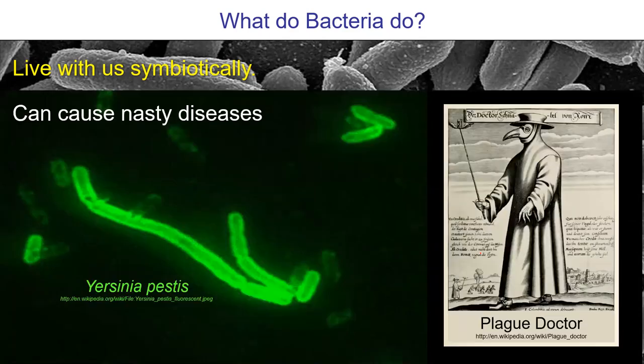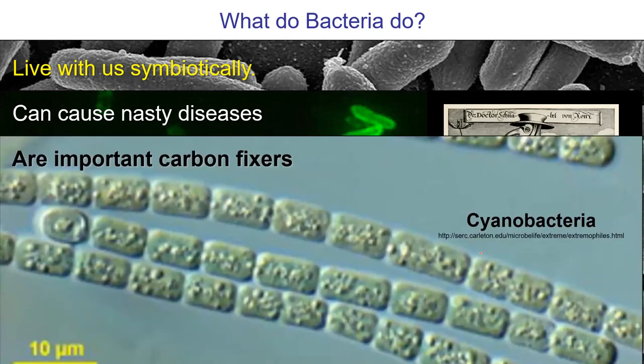Some bacteria do cause nasty diseases. Yersinia pestis — this is the bacterium that causes the black death, also known as the plague. That was obviously a massive problem that killed many people years ago; today, not so many. Many bacteria are photosynthetic. Cyanobacteria — cyan kind of means green and blue color — are carbon fixers. They make oxygen, and they make maybe half the oxygen on the planet. They're found in swamps, oceans, and they make tons and tons of oxygen, so we like these guys.